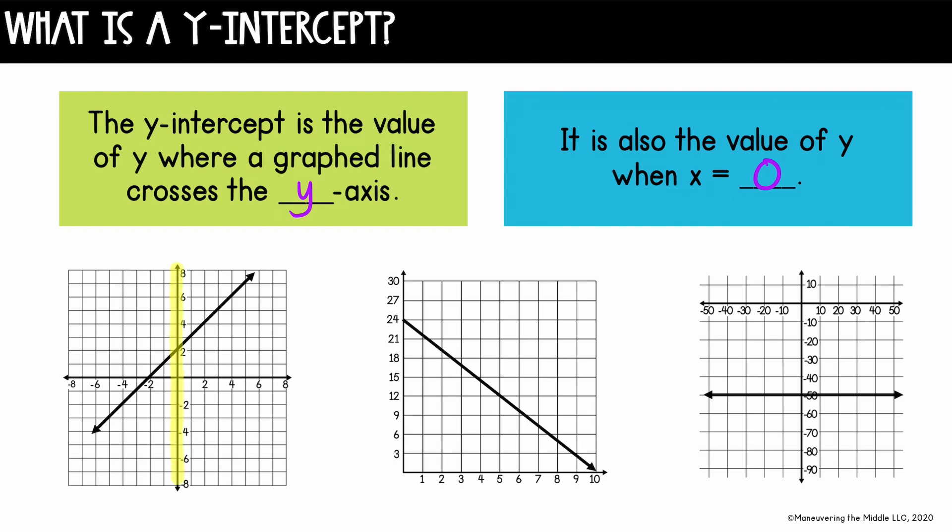So if you look at these three graphs, I will highlight the y-axis because we are looking for the point where the graph crosses or touches the y-axis. So on the first graph, you would say the y-intercept is two. On this graph, the y-intercept is 24. And for the last graph, the y-intercept is negative 50.